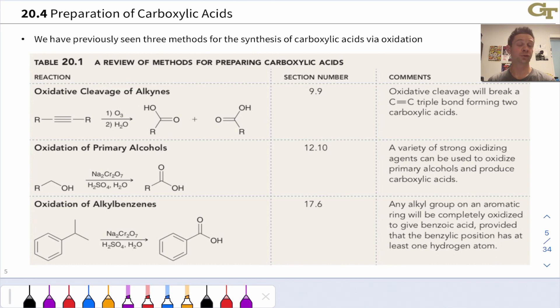This first reaction is ozonolysis, or oxidative cleavage, of an alkyne, which gives two carboxylic acids after workup with water. If the R groups are the same, we just get two equivalents of the same carboxylic acid, and this is the most preparatively convenient way to make carboxylic acids this way.